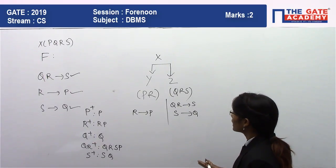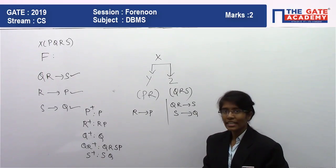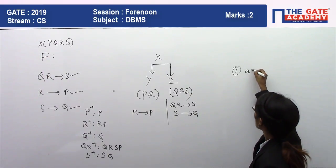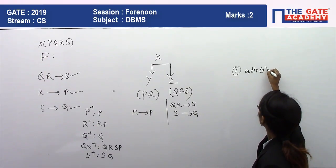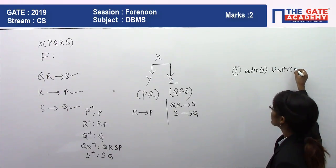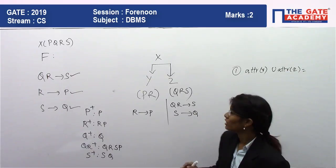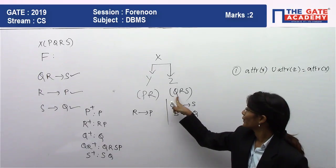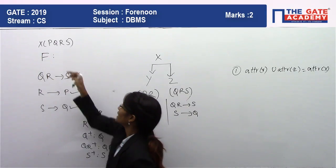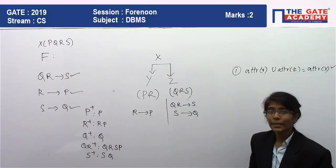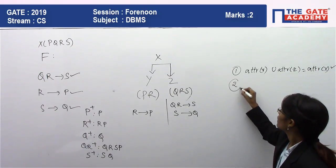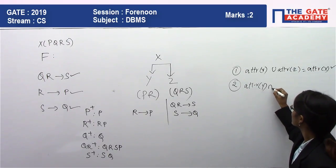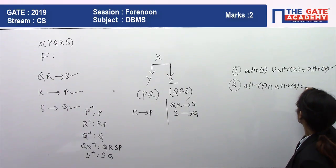Next we check whether the decomposition is lossless. For lossless decomposition we follow three rules. Rule 1: the union of attributes of Y and Z must equal the attributes of X. Attributes of Y ∪ Z = {P, R} ∪ {Q, R, S} = {P, Q, R, S}, which equals attributes of X. First condition is satisfied.